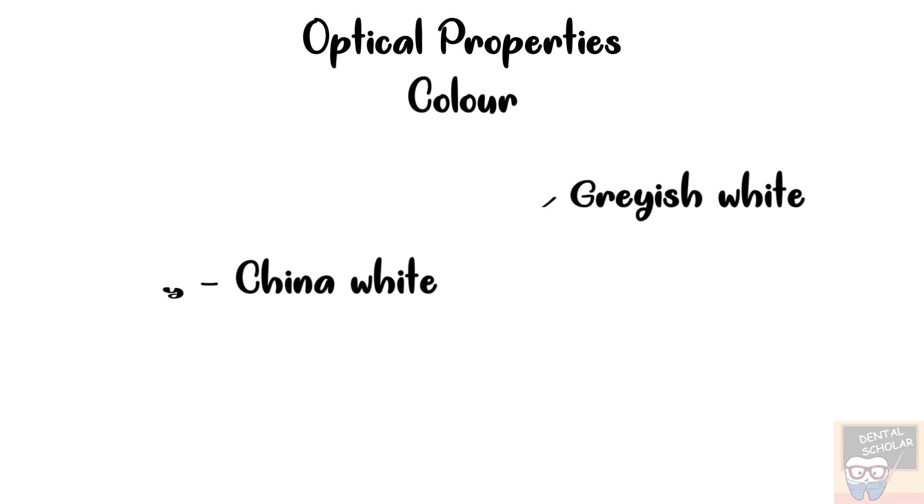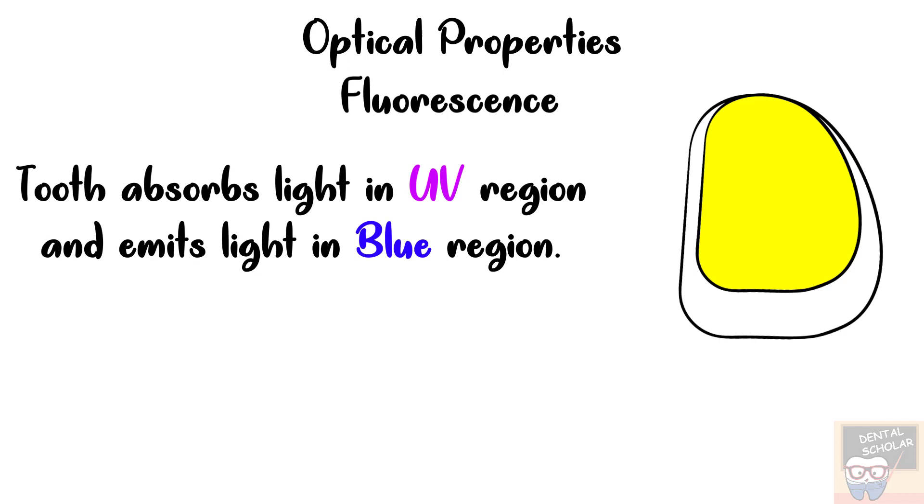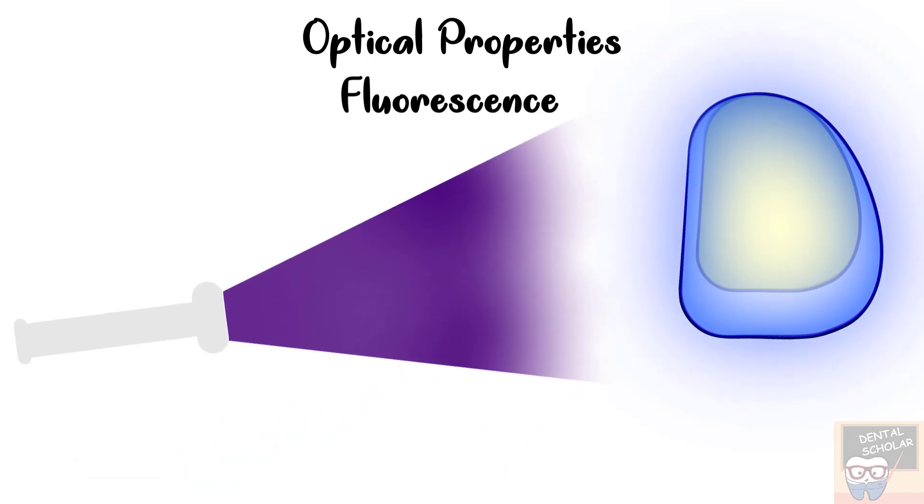Next property is fluorescence. Enamel absorbs light in the UV region and it emits light in the blue region. So it absorbs light of high intensity or high energy and emits a light of low energy. So when enamel is exposed to UV light, it appears blue.